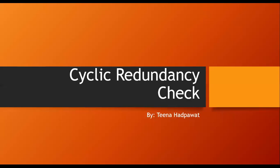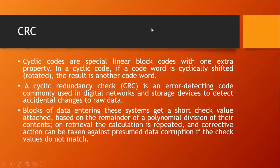Hello everyone. Today we will cover the topic cyclic redundancy check. Cyclic codes are special linear block codes with one extra property: if a code word is rotated by one bit, it will result in another code word. This is the basic property of cyclic codes. A cyclic redundancy check is an error detecting code used to detect errors.